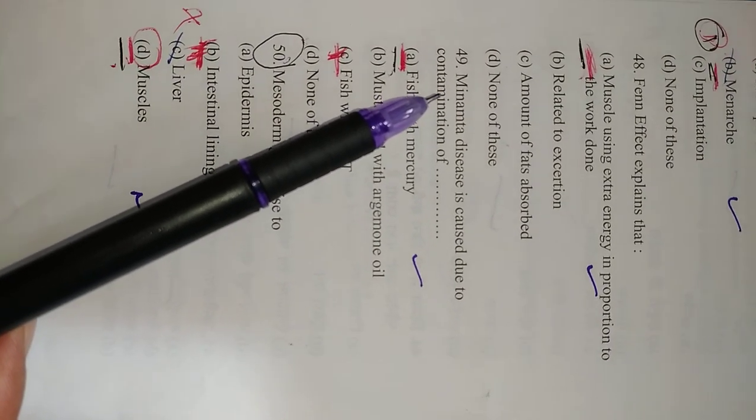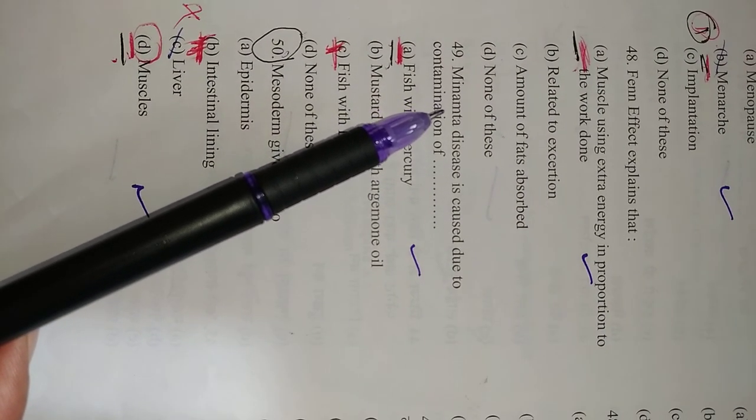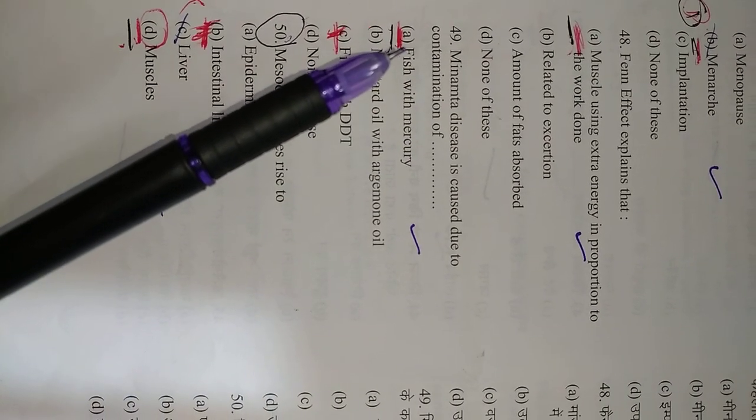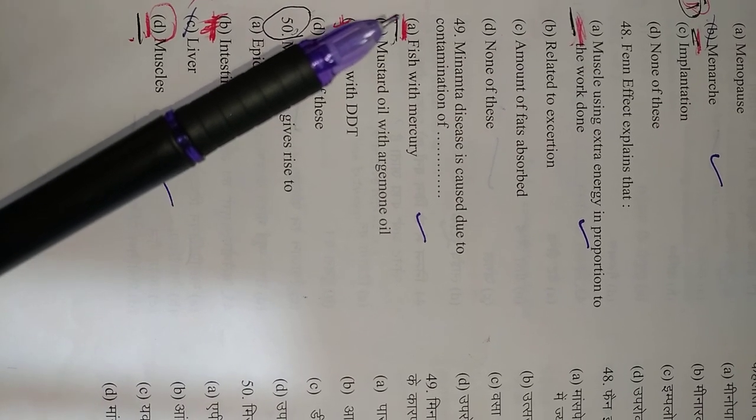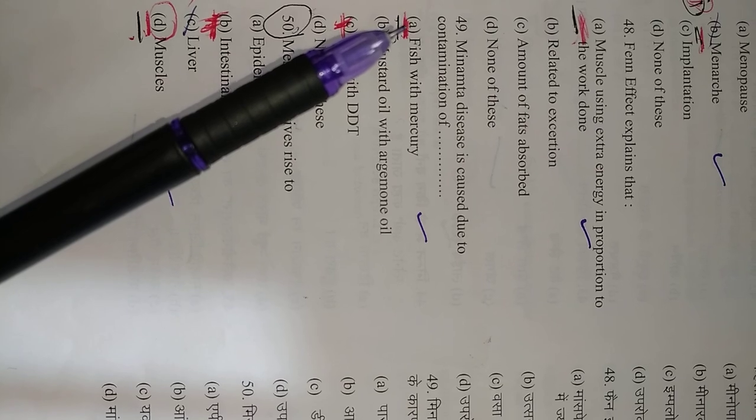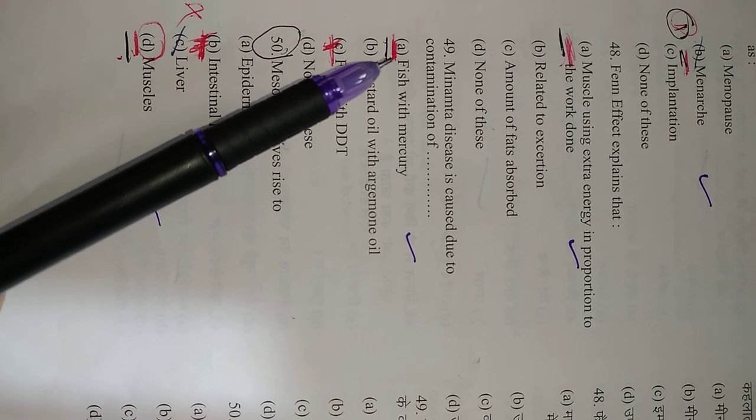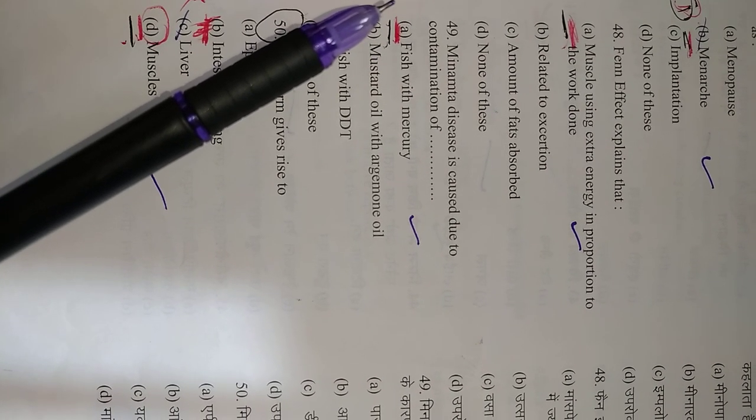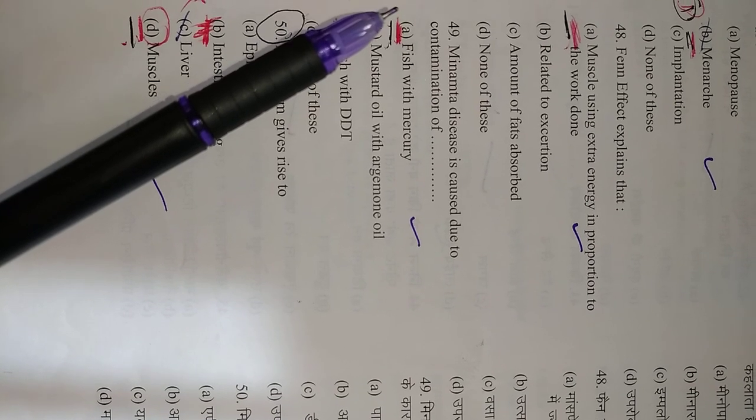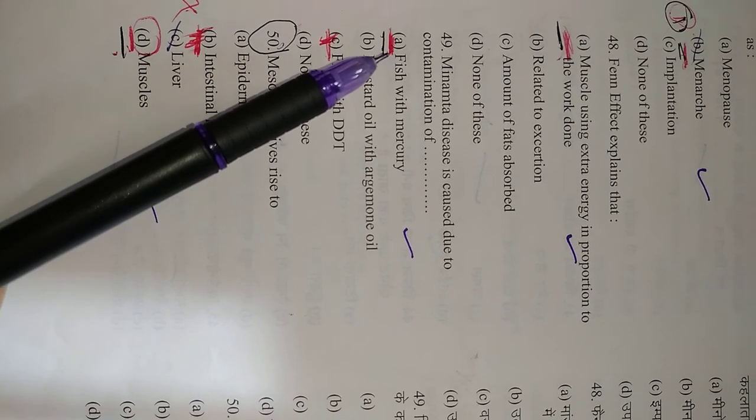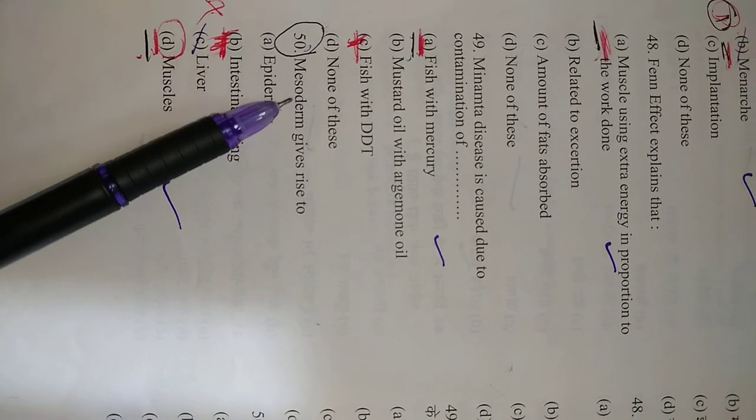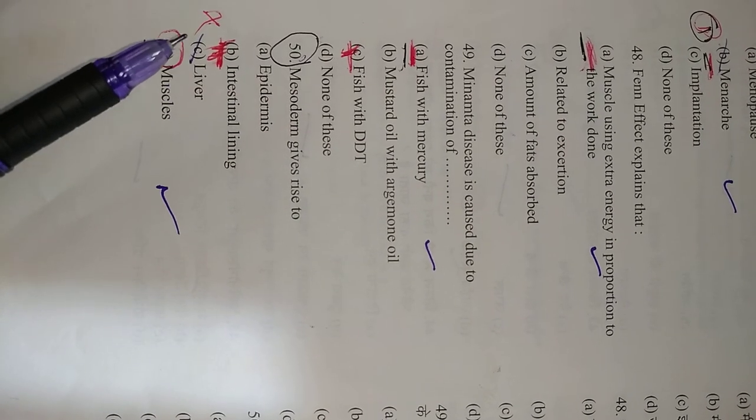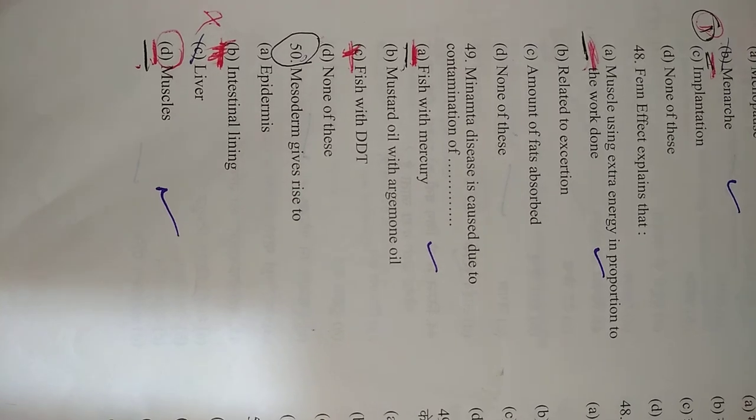Question number 49: Minamata disease is caused by due to contamination of mercury in water, and due to biomagnification it is accumulated in fish and causes Minamata disease. So right option is A, fish with mercury. It was discovered in the Minamata city. Question number 50: Mesoderm gives rise to—mesoderm gives rise to muscles, so muscles are mesodermal in origin. So right option is D.